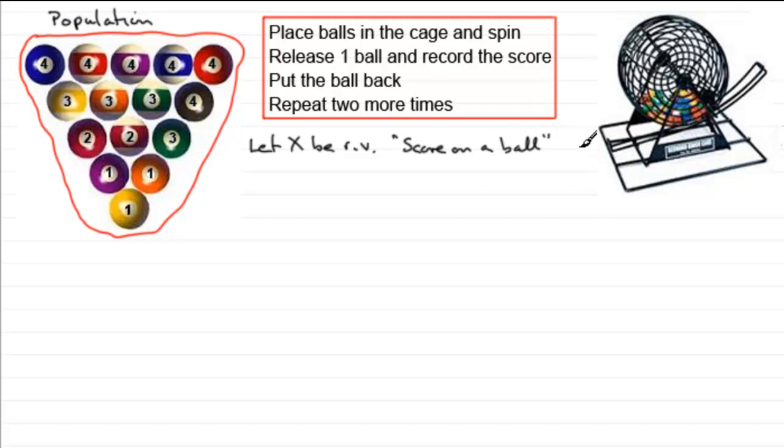And if we were to construct a probability distribution table, then we'd have our observed value X, and we would see that that observed value could be a score that was either a 1, 2, 3 or 4. So if we just put those scores in here, 1, 2, 3 or 4.